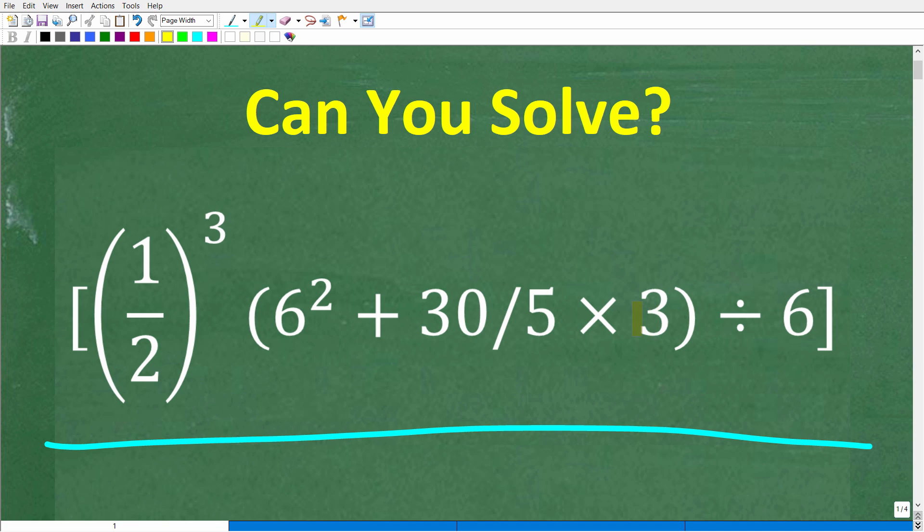Okay, so let's take a look at the problem. We have bracket, then one half cubed. And now here I have parentheses, but the problem that I'm going to be doing has no parentheses. But either way, this is what we have. Times parentheses. Now this parentheses right here is very important: 6 squared plus 30 divided by 5 times 3, and parentheses divided by 6 and bracket.